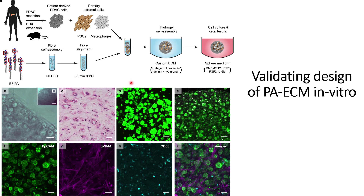They then checked the viability assay after 14 days, and the cells were found to be viable — stained green — while dead cells stained red were very few compared to viable cells. They also checked proliferation characteristics using Ki67 markers, shown in white, indicating that pancreatic cancer cells maintain proliferative characteristics even after seven days of co-culture.